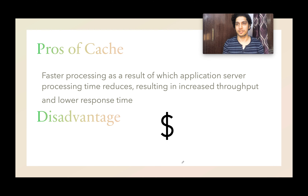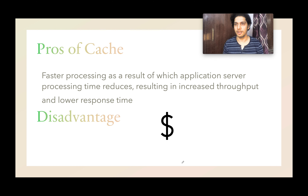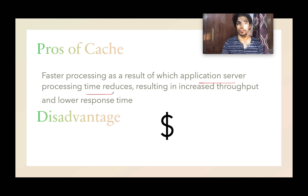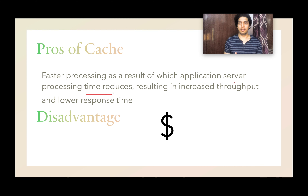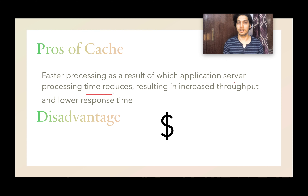So these two entries — the in-memory of the application server and the external cache — are actually two different kinds of caching layers in the system. Let's talk about the pros and cons of caching. Caching is needed for faster processing because if you are able to retrieve data quickly rather than querying the database, the application can process more information — throughput increases, response time comes down, it can serve more APIs and respond to customer queries quickly. The disadvantage is that you have to shell out money for it.